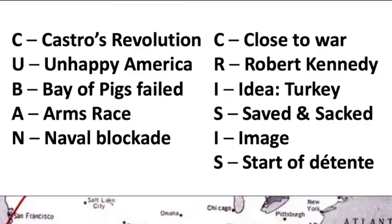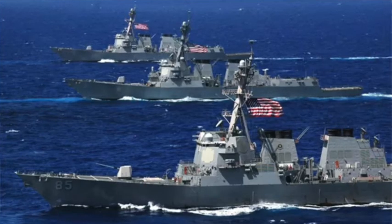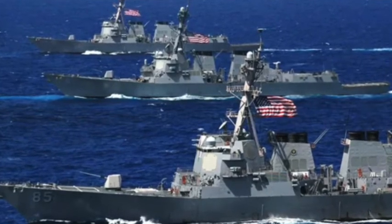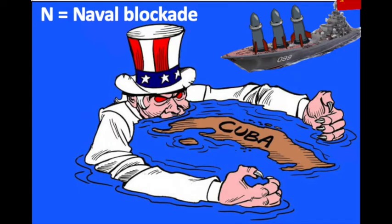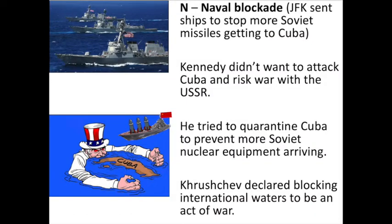Cuba is in America's sphere of influence, just a few hundred miles away, so it's very scary to the American government — but Khrushchev refuses. Kennedy has a number of options; he can go to war, but potentially that's nuclear war and the whole world could be destroyed. So he opts for a slightly less aggressive strategy: N — a naval blockade. American warships go out to sea and stop Soviet ships from reaching Cuba. Khrushchev declares this an act of war, saying America is breaking international law, and tension really begins to rise in October 1962.